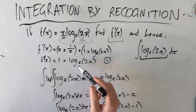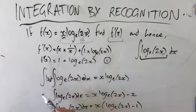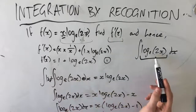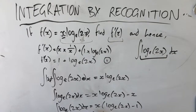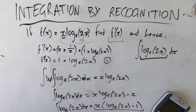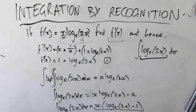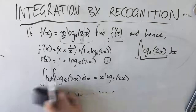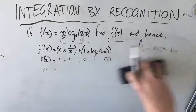So to recap: we derived the first part, then we said the antiderivative of that derivative gives us back the original, and we simply isolated the parts we needed. The integral of log_e(2x) is x·(log_e(2x) − 1). I checked that in the calculator and it is correct. So that's the first example. The second example is a little more complex.